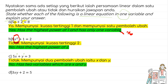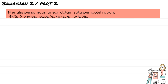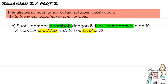The last one: 3xy + 2 = 5. Here we have two variables, x and y. When you have this type where x and y are multiplied together, it is not linear. So no, it has two variables, x and y. For part 2, we need to write the linear equation in one variable based on a given situation.